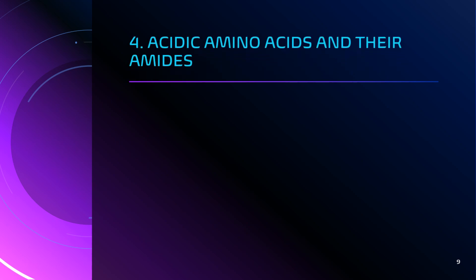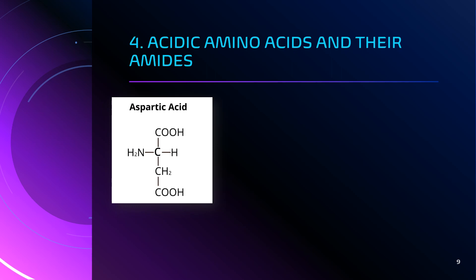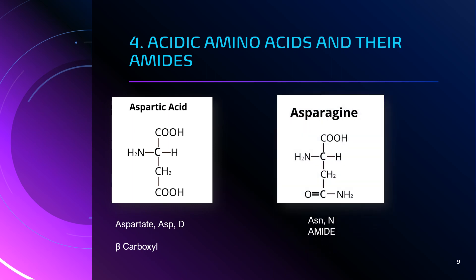The fourth category in the structural classification is acidic amino acids and their amides. Amino acids have both an amino group and an acidic carboxylic group. In acidic amino acids, they have an extra carboxylic group. Their amides — where a CO-NH2 bond is present — are also included. The first acidic amino acid is aspartic acid, and its amide is asparagine.